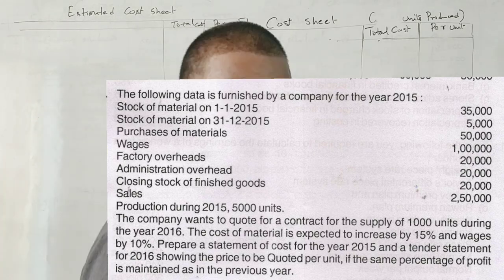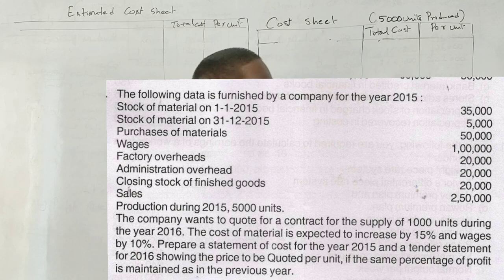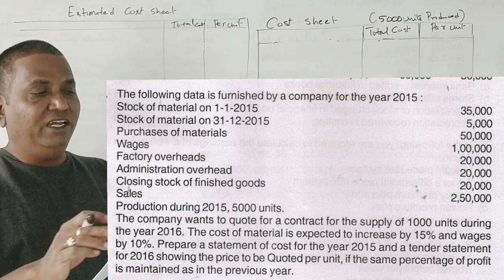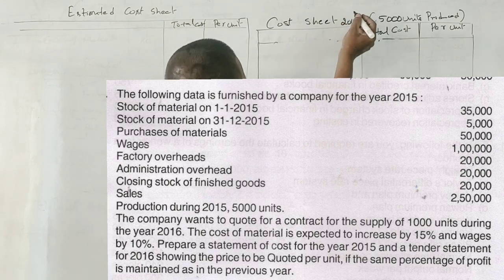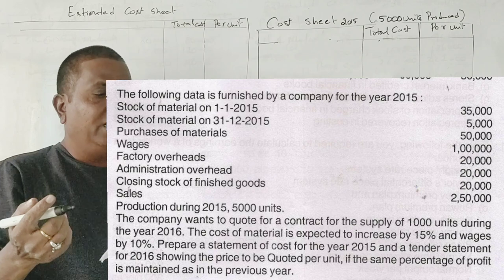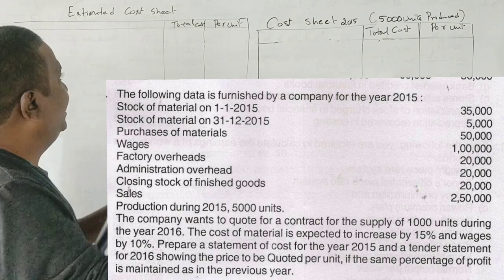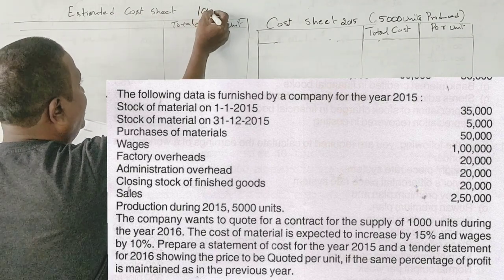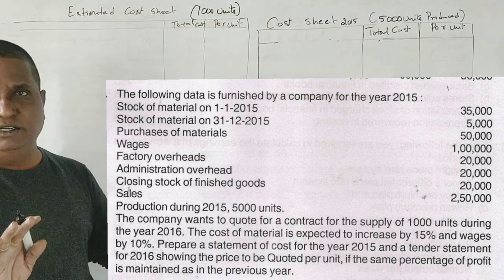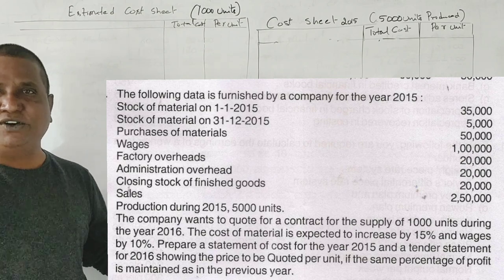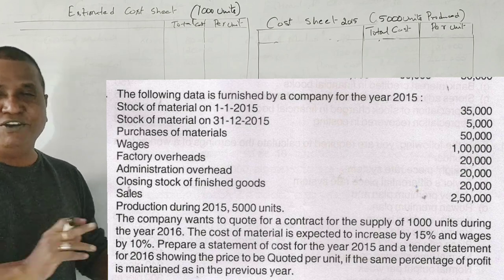In the year 2015, how many units are we manufacturing? 5000 units. This we have to mark it clearly. 5000 units we are manufacturing in the year 2015. Now, what is given in the other paragraph is the company wants to quote for a contract for the supply of 1000 units. We are preparing an estimated cost sheet for 1000 units. Last year we manufactured 5000 units and sold them. This year, one customer ordered 1000 units and is asking what the selling price will be — that we have to calculate.